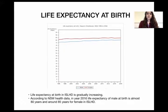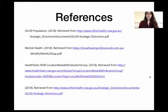Focusing on life expectancy, female life expectancy at birth is 85 years, and for males it is 78 to 80 years. This has gradually increased in 2016 compared to the past, which is a good sign.